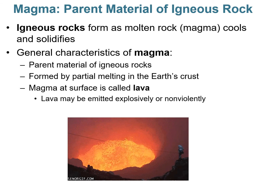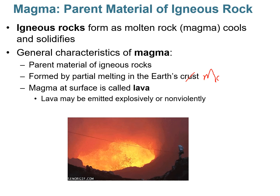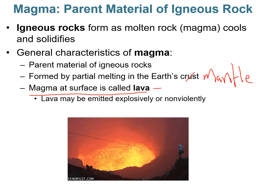So let's talk about igneous rocks. The parent material of igneous rocks is magma. Igneous rocks form from molten rock as it cools and solidifies. Magma forms by partial melting in the Earth's upper mantle. When magma reaches the surface, it undergoes a name change — it's called lava. And lava can be emitted non-violently or explosively.